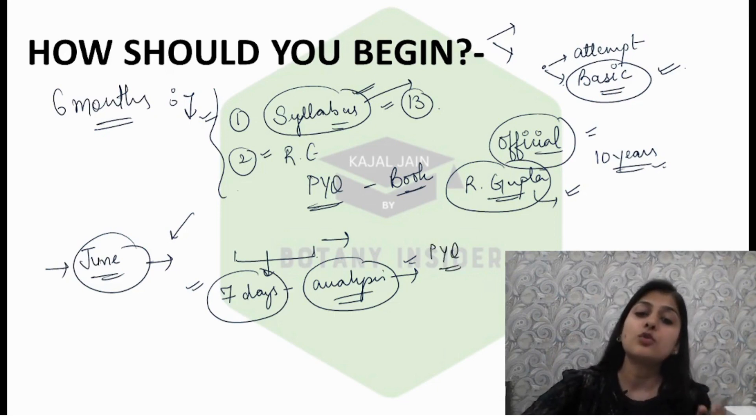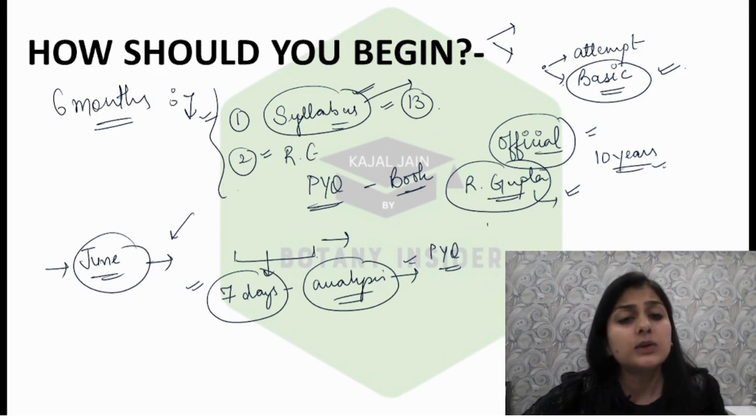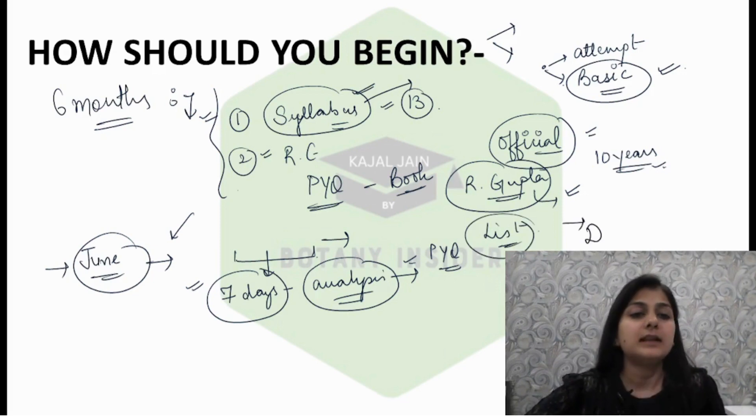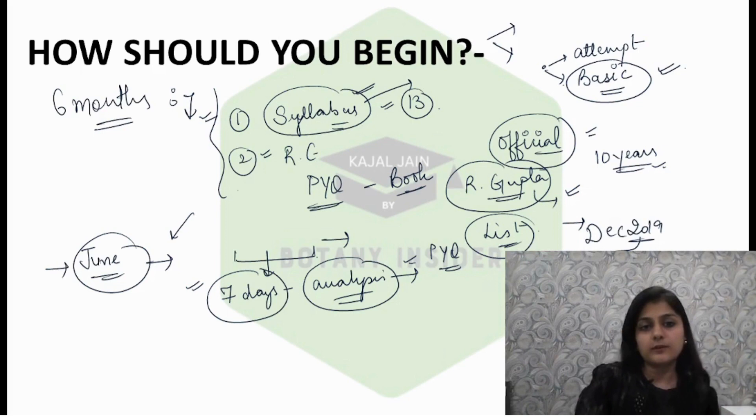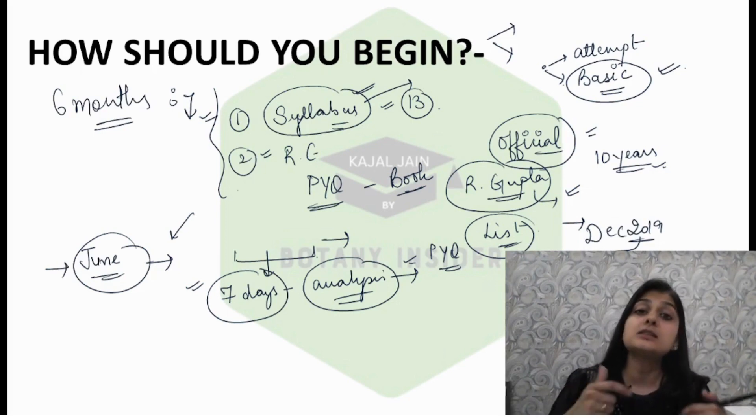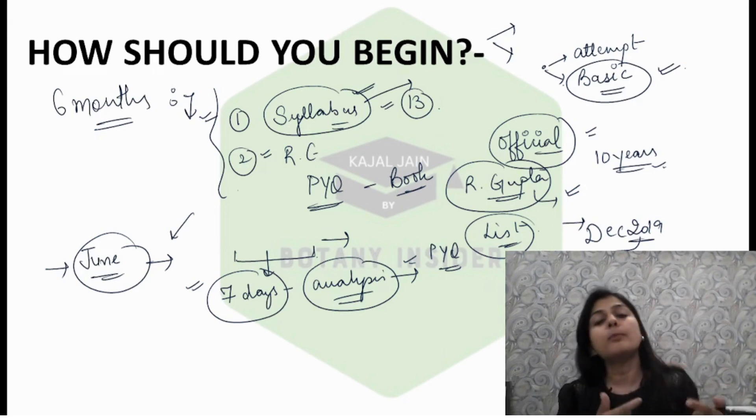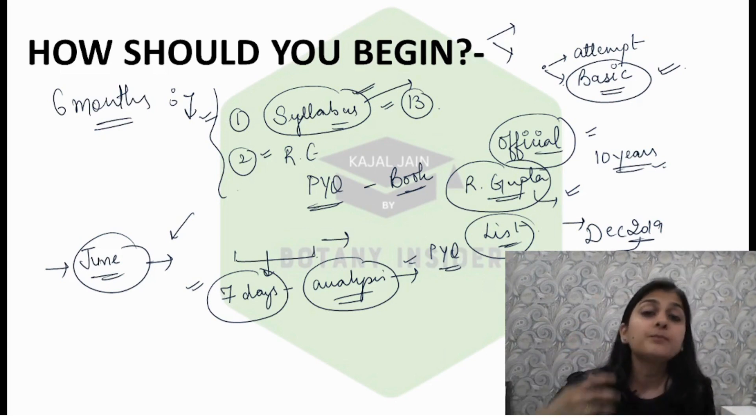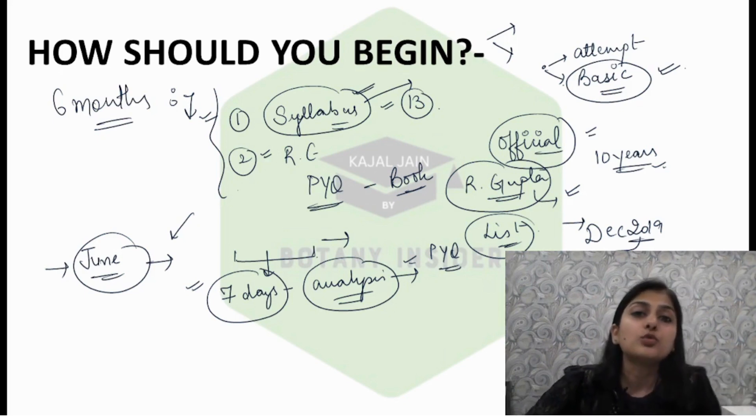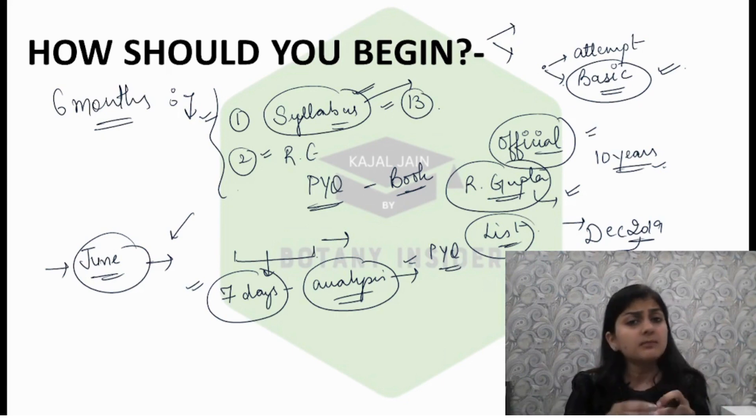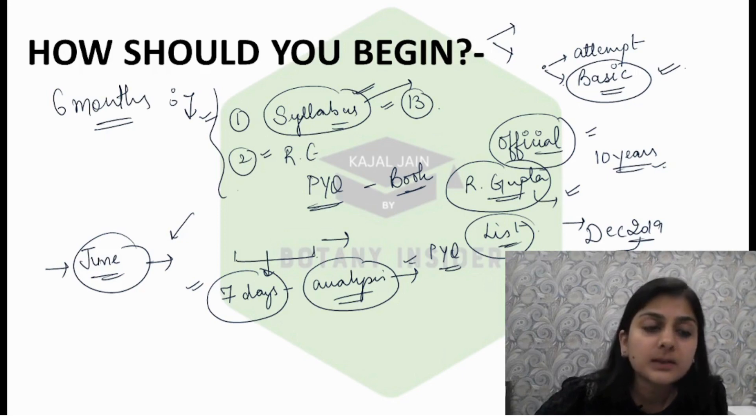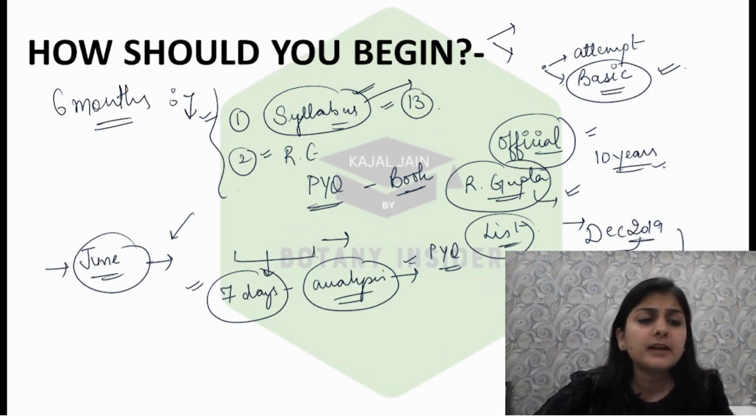Make sure you analyze previous year questions for the initial 7 days. You can make a list of topics as well. For example, take the December 2019 paper, analyze what type of questions come and from which topics. Also identify which topics have questions every year, because this would be easier for us to target those topics. There are few set topics from where questions get repeated every year. For example, in unit 1, enzymes is a topic where questions come every year.